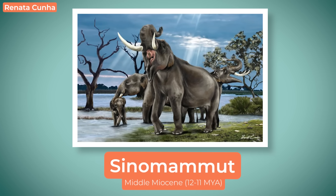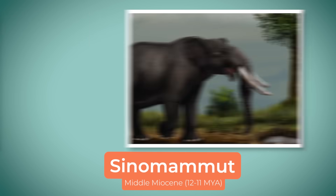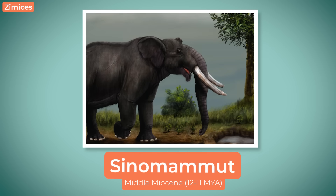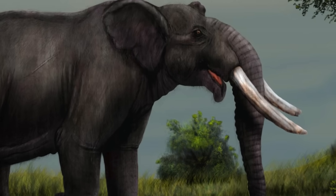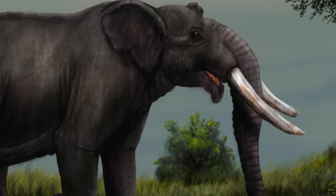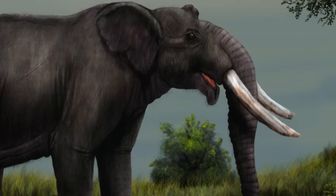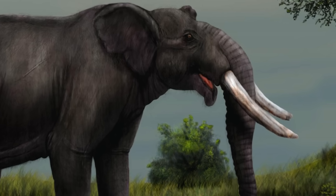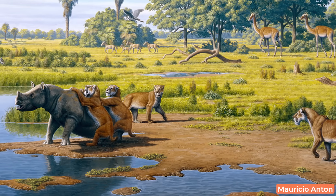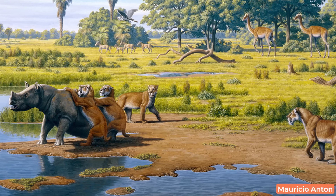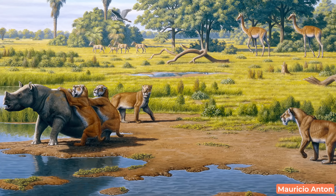Sinomammut, a Miocene genus known from extremely fragmentary remains, could be found in China. This animal has historically been grouped with other Proboscideans such as the Gomphotheres, but some recent studies place it within Mammutidae, as sister to one other very notable genus — one thought to have evolved from Zygolophodon. To discuss that, we first need to talk about one last place Zygolophodon visited: North America.